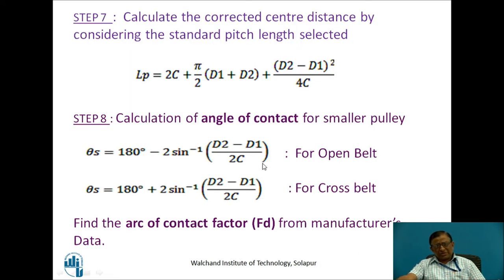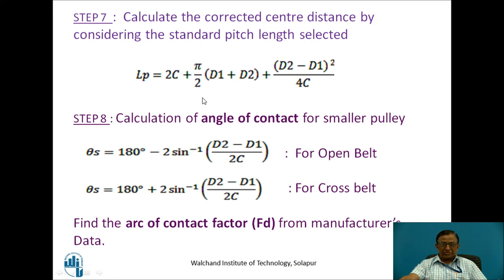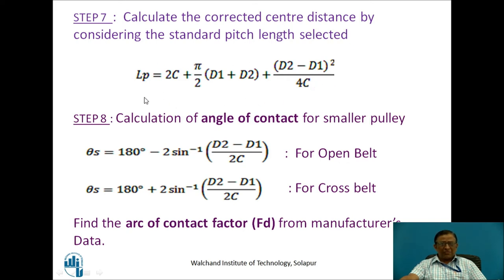As we obtain a standard pitch length different from the calculated requirement, it becomes necessary to correct the center distance. We started with an approximate center distance requirement, calculated some value, and then selected a standard. That deviation must be accounted for by calculating a corrected center distance using the same equation.